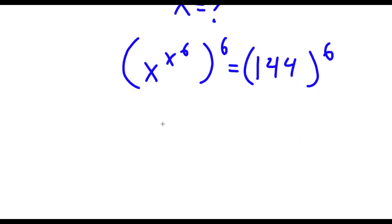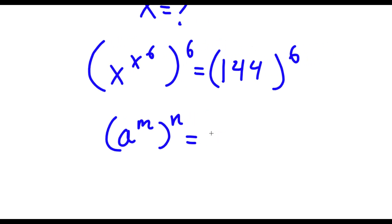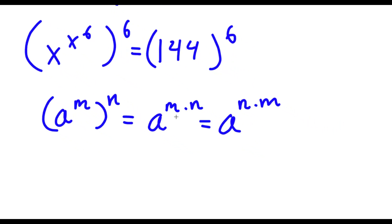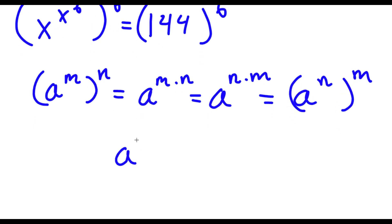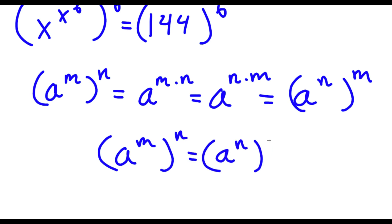Now if I have something in the form a to the power of m to the power of n, this is the same thing as a to the power of m times n. And m and n, these two are interchangeable, meaning this is the same thing as a to the power of n times m. So if a to the power of m times n equals a to the power of m to the power of n, then a to the power of n times m has to equal a to the power of n to the power of m. In simpler terms, a to the power of m to the power of n is equal to a to the power of n to the power of m.